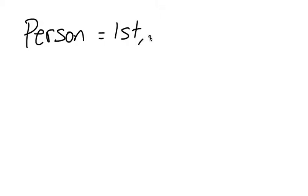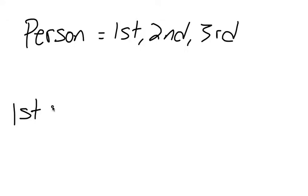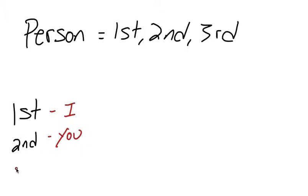We also need to know that verbs have person, and there are three persons: first person, second person, and third person. First person essentially would be I — I am the speaker, I am the one telling the story. Second person would be you. And third person could be he, she, or it — basically someone that's not I or you.